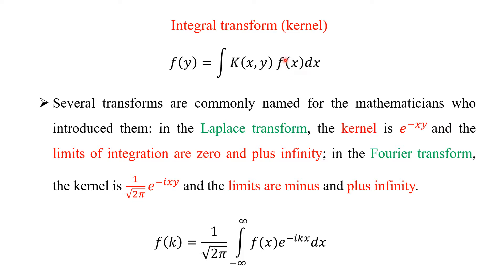Let us say we have a function f of x. We want to convert f of x to f of y, where x is the variable and we want to convert y as a variable. For that we define an integral transform, which is the integral over k of xy times f of x dx. This is a two-variable function which is called the kernel of this integral.